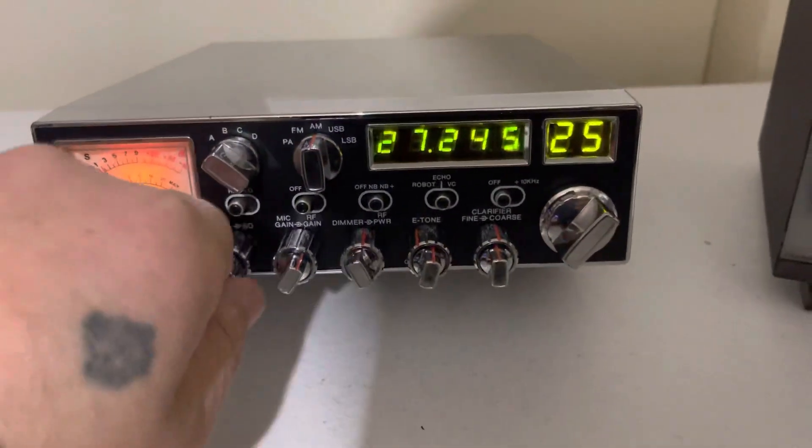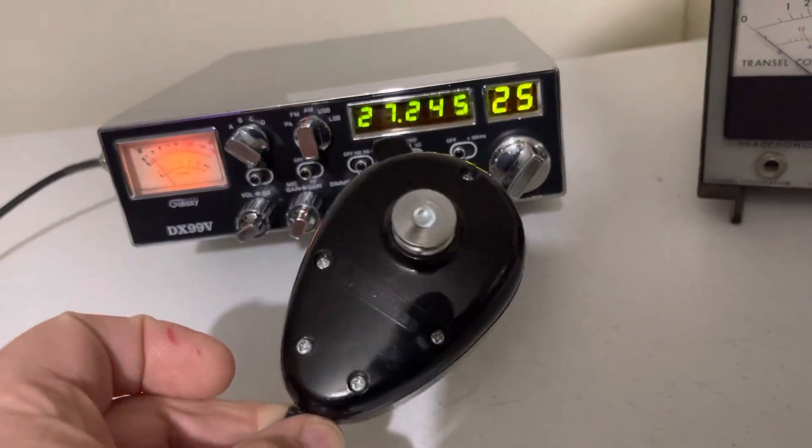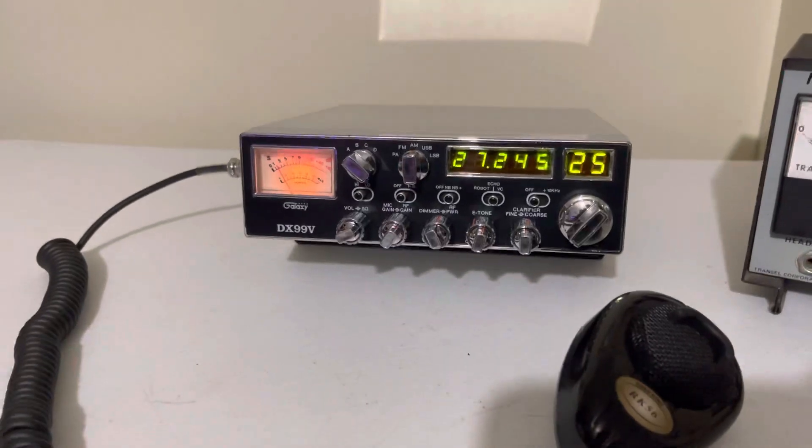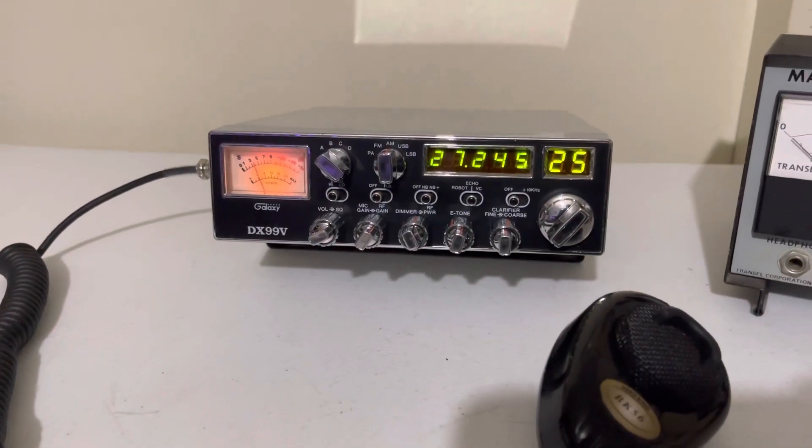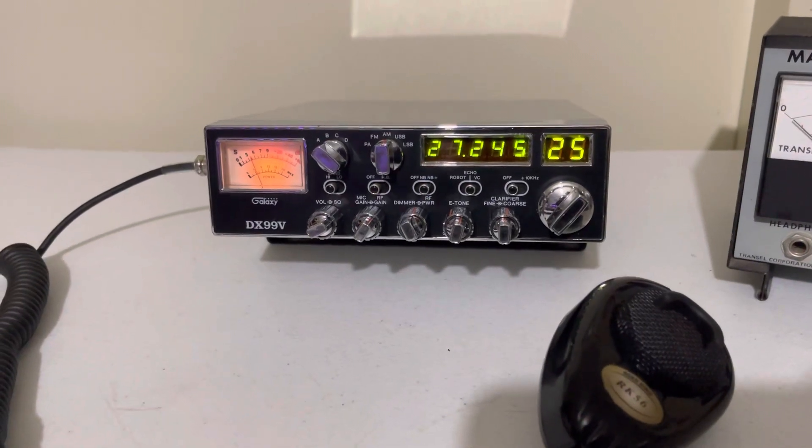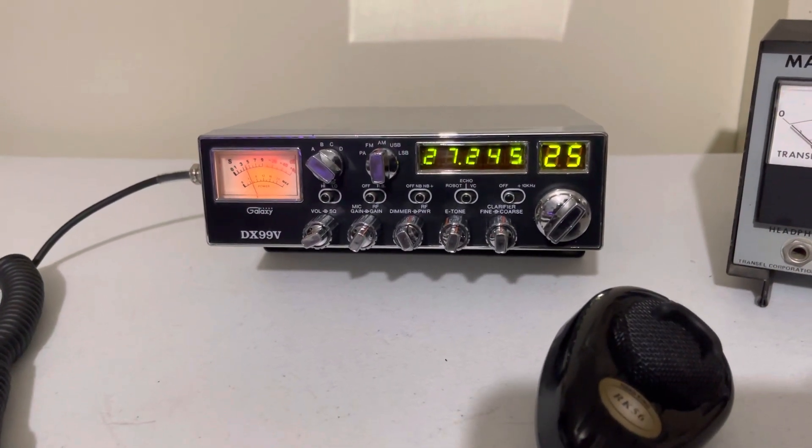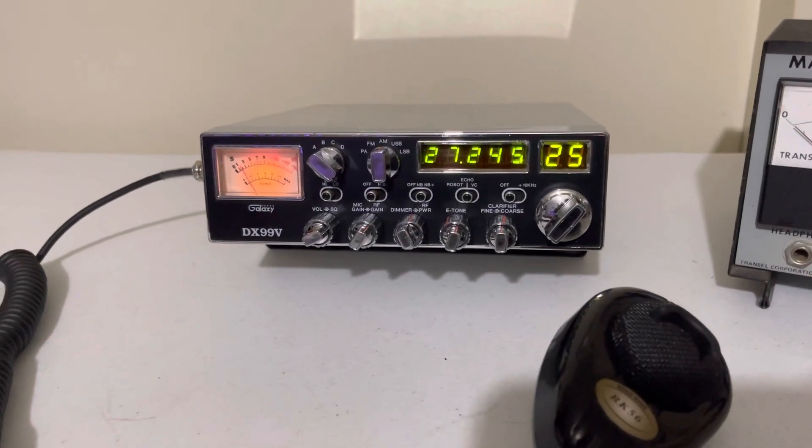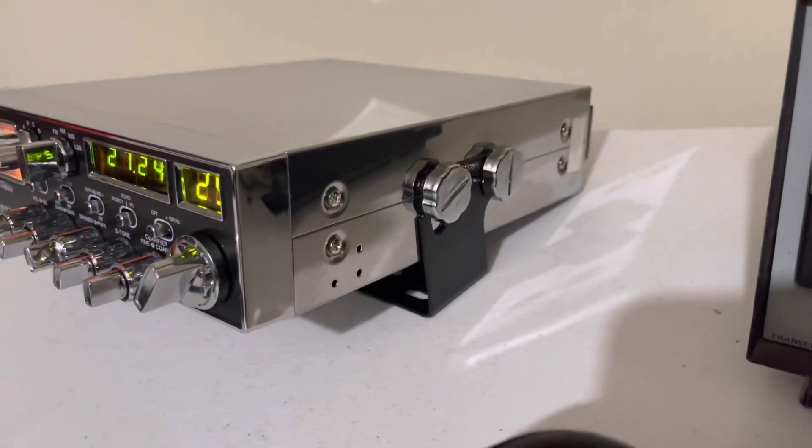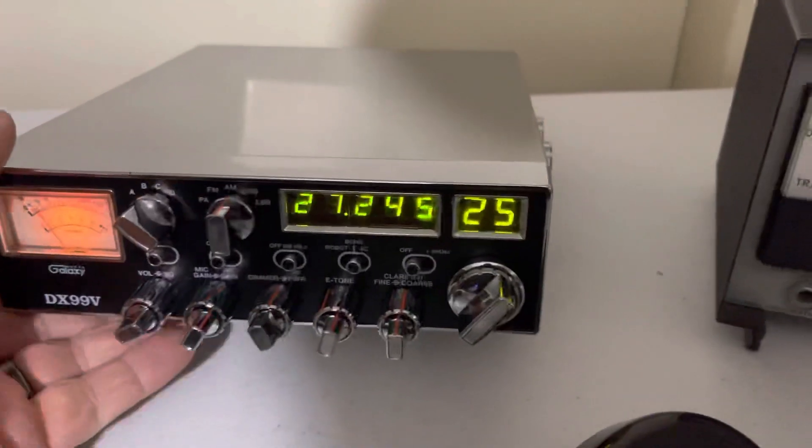So it's your good old classic. It comes with a Turner Road King 56 microphone as well. You don't find the Galaxies like this anymore, the old school 99V's. I was gonna hang on to it, I figure I'll list it. If it sells it sells, if it doesn't I'll hang on to it. I don't mind. It's a classic.